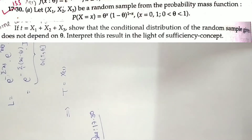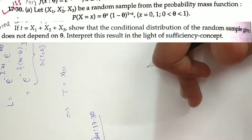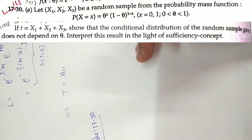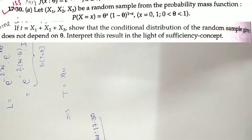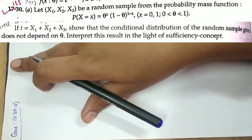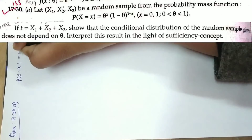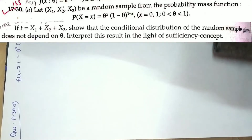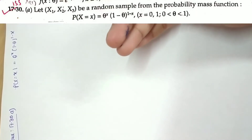As I explained earlier, one method for checking sufficiency is the conditional distribution method, and another is the Neyman factorization theorem. For the conditional distribution method: if the conditional distribution depends on theta, then T is not a sufficient statistic; if it does not depend on theta, then T is a sufficient statistic. Here we have to prove T is sufficient. The PMF is P(X = x) = theta^x · (1 - theta)^(1-x), for x = 0 or 1, and theta ∈ (0, 1) — this is the Bernoulli distribution.